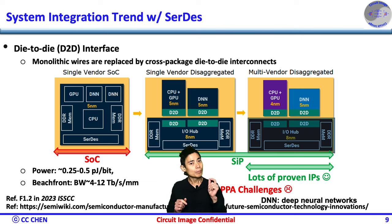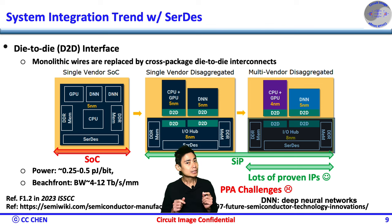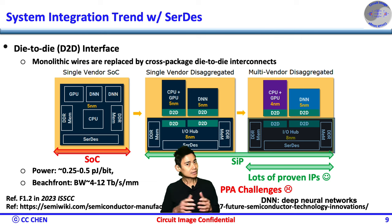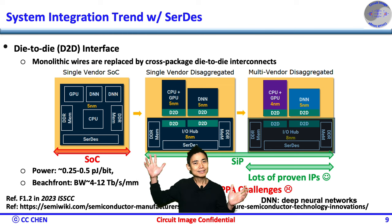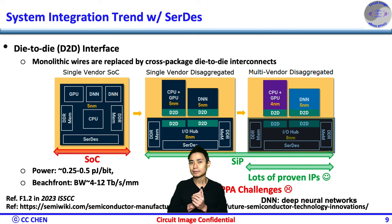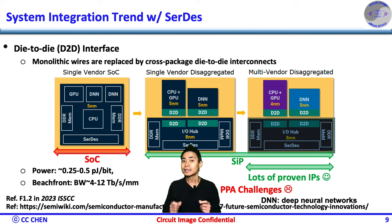To mitigate the manufacturing yield issue, people think about the System-in-Package (SiP) instead of the System-on-Chip (SoC). Therefore, monolithic wires are replaced by cross-packaged die-to-die interconnect, and the serdes die-to-die interface is a must. In addition to yield, another benefit of SiP is that we could leverage IP from multiple vendors instead of a single vendor. Silicon-proven IP might not be available in 4nm as the CPU or GPU, but we can still use silicon-proven IP in an older process node.